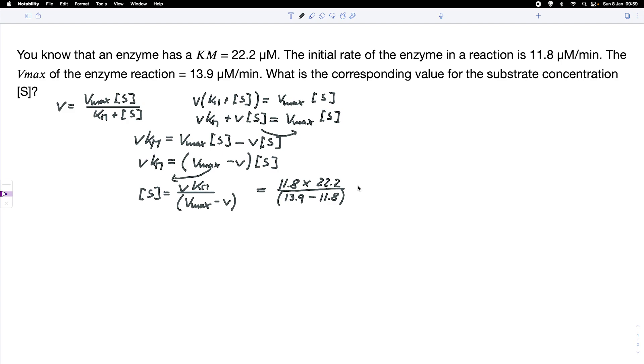And the units: we have micromolar per minute times micromolar here. So micromolar per minute times micromolar, and here we still have the unit micromolar per minute. So the micromolar per minute cancels out, and we end up with a unit that makes sense, which is a concentration here in micromolar.